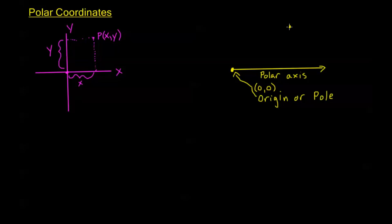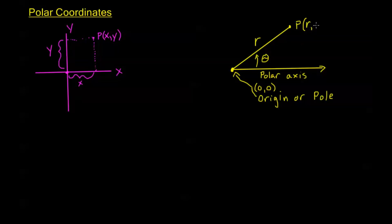If we have a point P out in space in polar coordinates, instead of measuring the distance horizontally and the distance vertically from the origin, we're going to first measure the distance directly from the origin to P. We say that this distance has a measurement R — the line segment that goes from the origin to P. Our second unit of measurement to find P is going to be the angle theta, where that angle is the angle between the polar axis and the line from the origin to P. So our point P we would denote as P(R, theta).